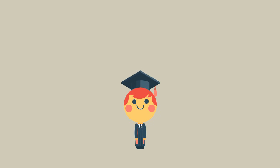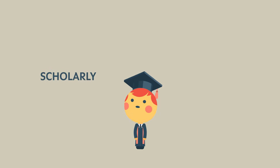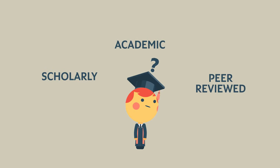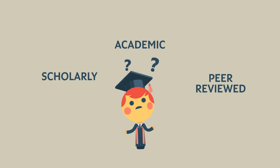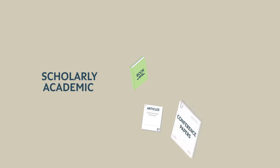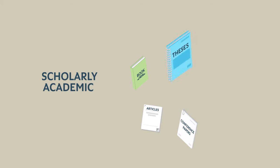Often at university, you'll be told to use scholarly, academic or peer-reviewed sources to support your ideas in your assignments. But what does this mean? Scholarly sources can also be called academic sources. These include journal articles, books, book chapters, conference papers and theses.